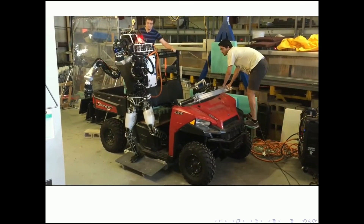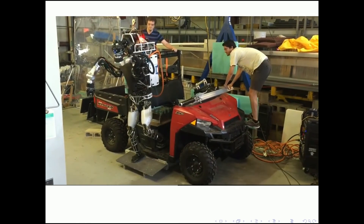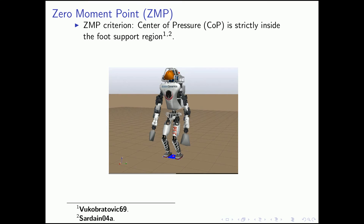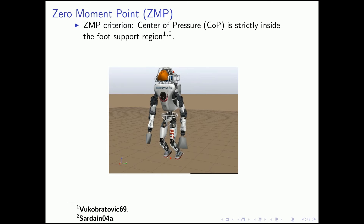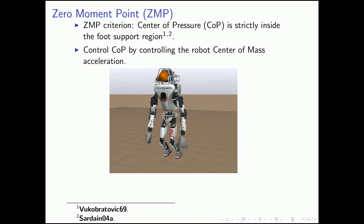The robustness notion we use here is the zero moment point. The criteria is that the center of pressure lies strictly inside the foot-support region. When the center of pressure goes to the boundary of the foot-support region, the robot foot can tip over and the robot might fall down. So we want to control the center of pressure by controlling the robot center of mass acceleration, such that the center of pressure is far away from the boundary of the foot-support region.